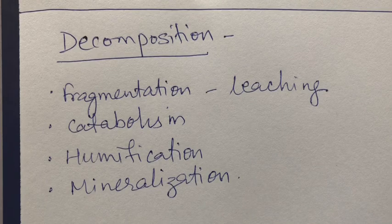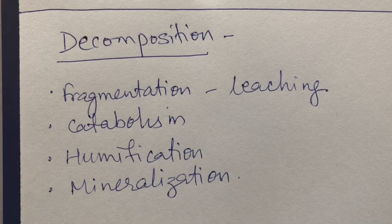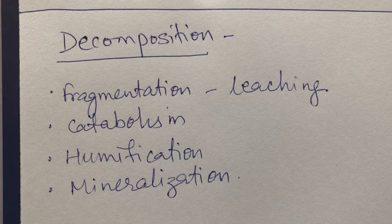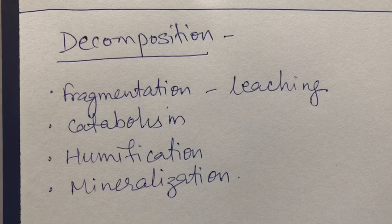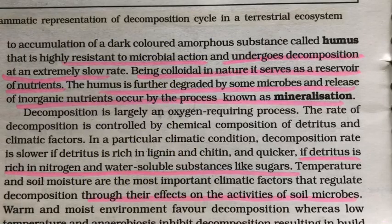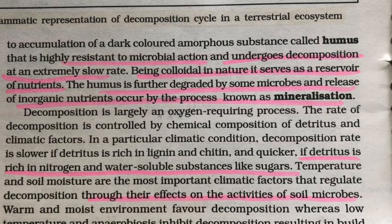After humification comes mineralization, where humus is slowly degraded by microorganisms and inorganic substances are released. During this process, certain minerals are incorporated into microbial biomass and become unavailable to other organisms — this is called immobilization of minerals. Factors affecting decomposition rate include oxygen, temperature, humidity, and the type of substance being decomposed. Substances rich in lignin and chitin decompose more slowly.